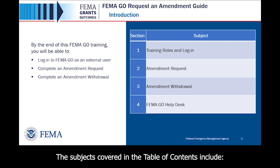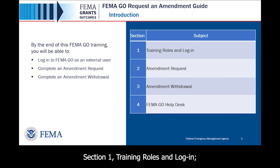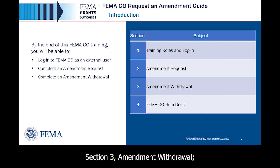The subjects covered in the Table of Contents include Section 1: Training Roles and Login, Section 2: Amendment Request, Section 3: Amendment Withdraw, and Section 4: FEMA GO Help Desk.